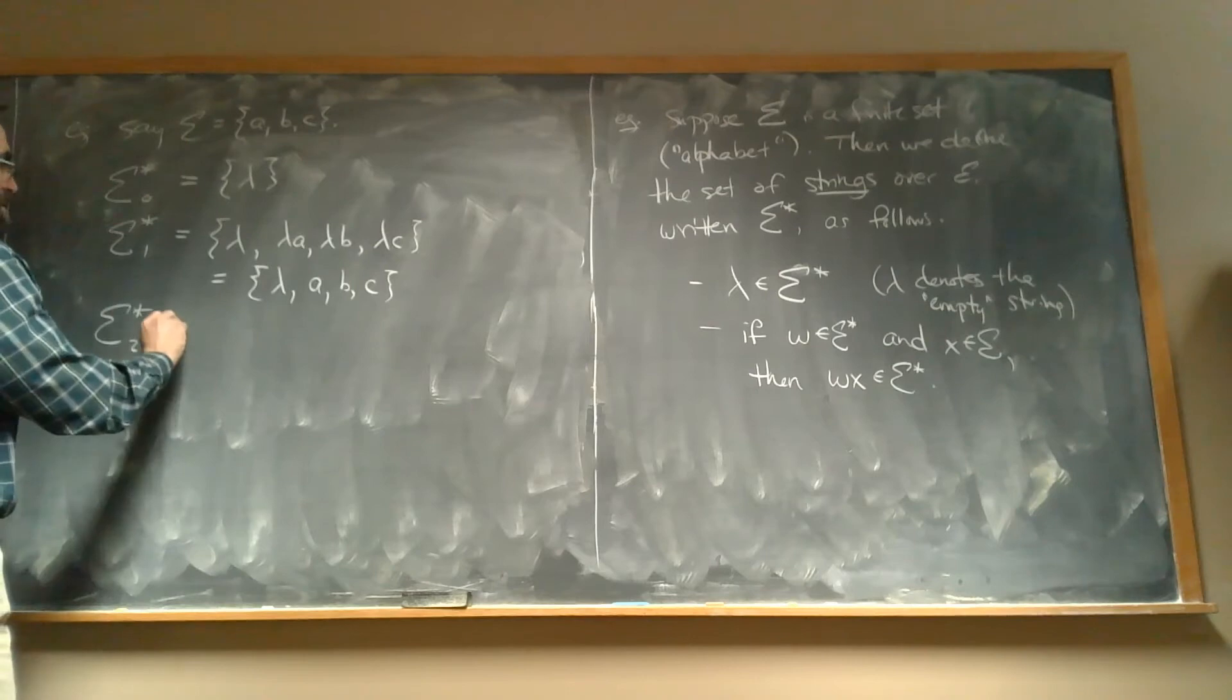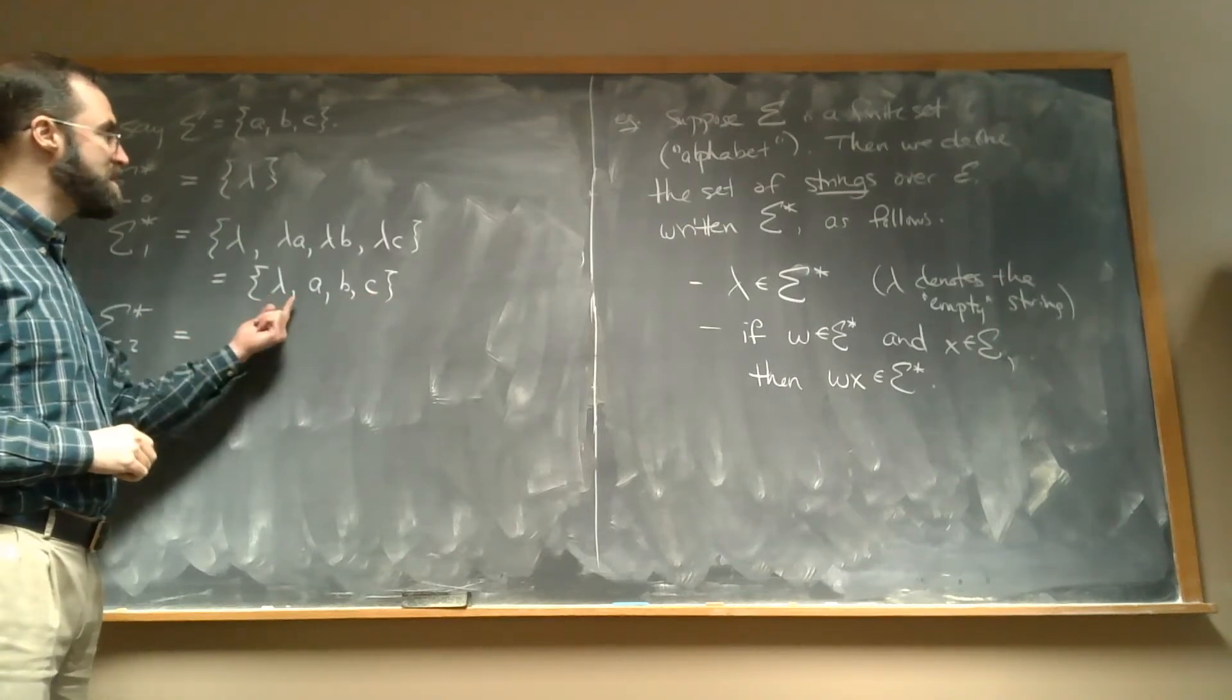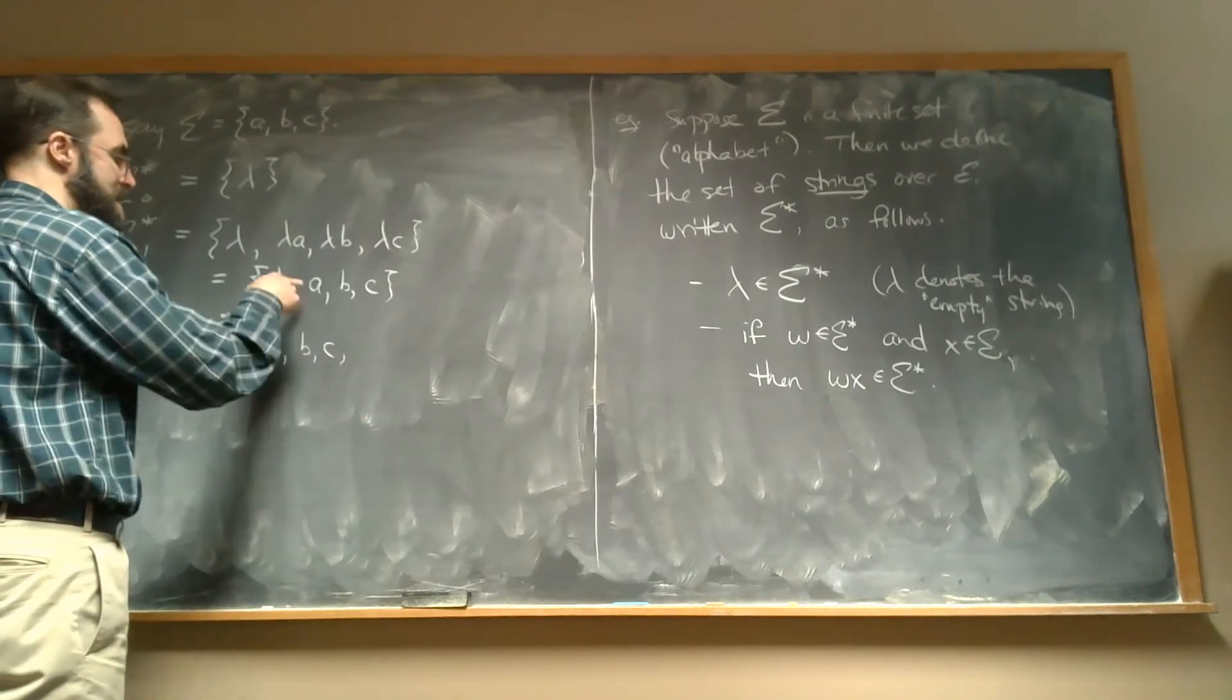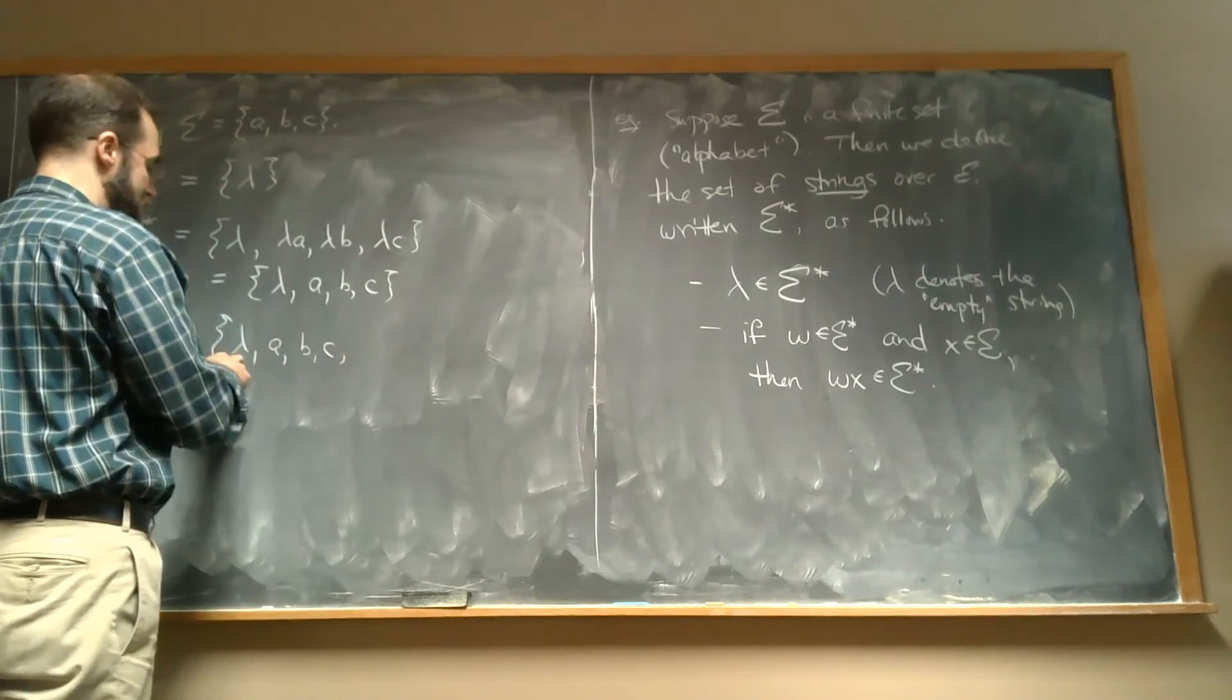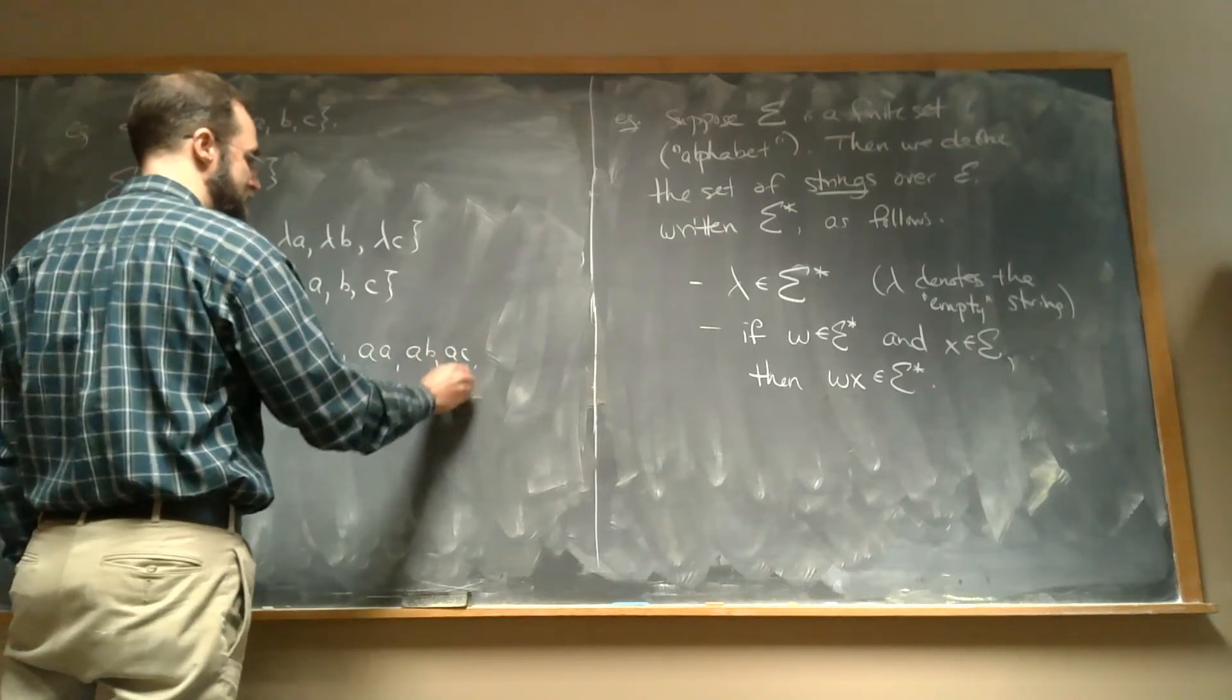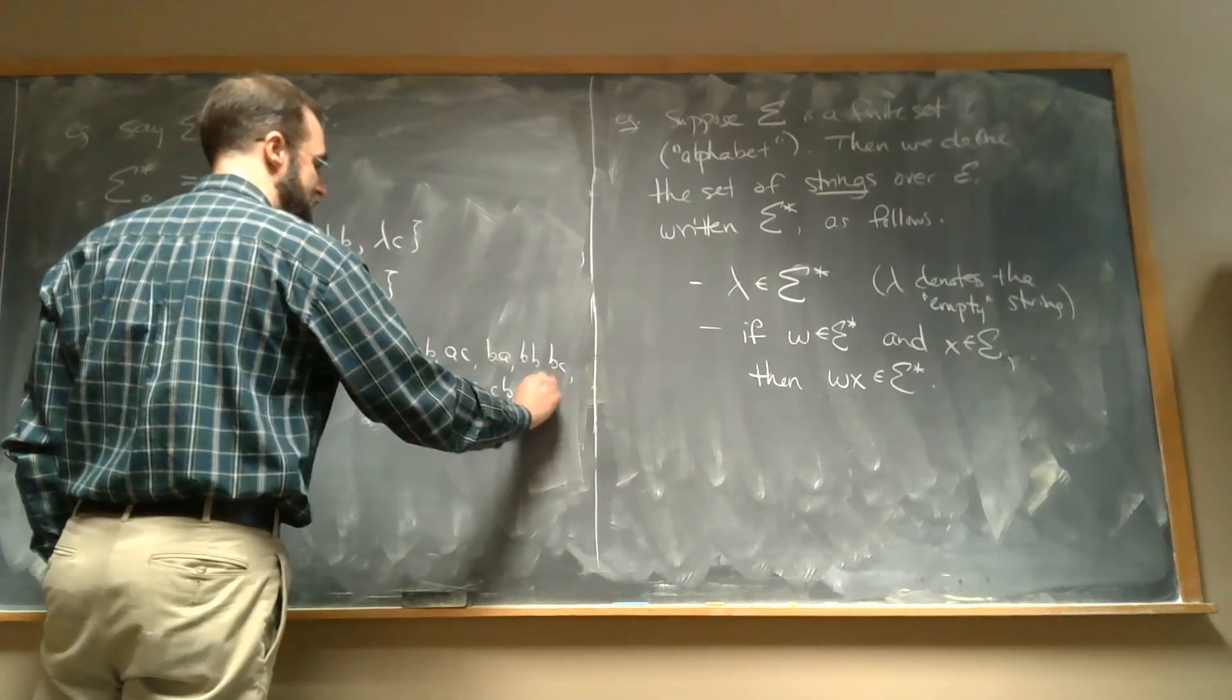And then stage two is, we take all of these things, and we copy those. Plus, we get all the stuff where we take any one of these, and then add on a single letter to the end. So we're going to still have lambda empty, and then a, b, c. But then I can take anything in here and add one letter. So I get, I already had what I get from adding a letter to lambda. If I add a letter onto one of these, I'll get like aa, ab, ac, ba, bb, bc, ca, cb, cc.